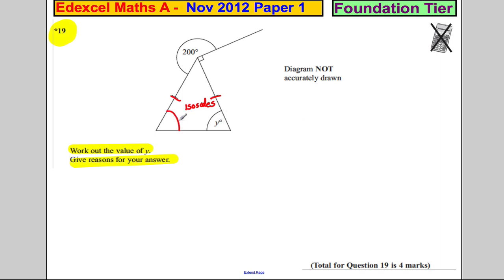Therefore, this angle must be the same as this angle and that must be Y. So we should probably write that down. Triangle is isosceles, so have two Y angles.